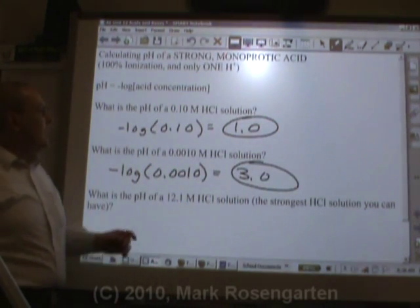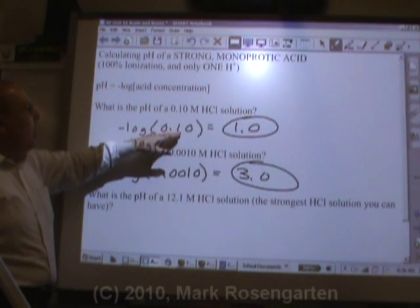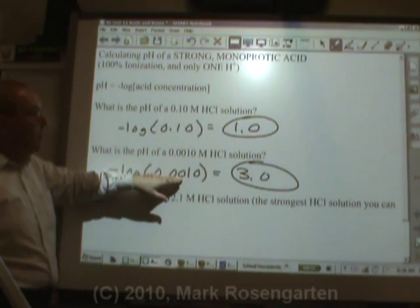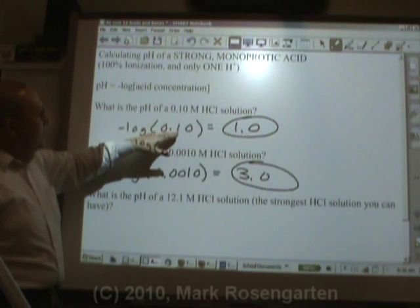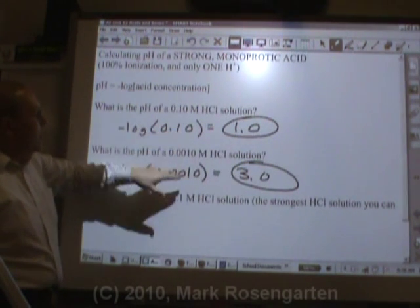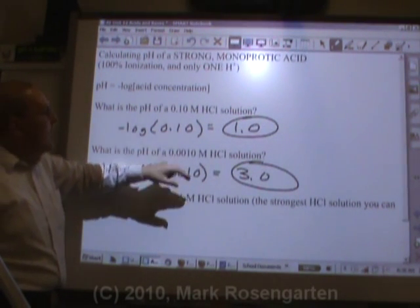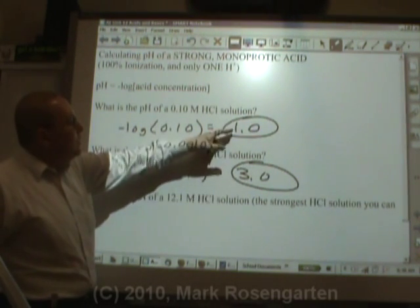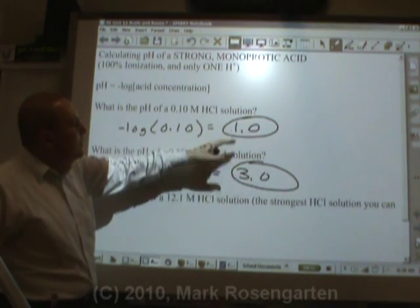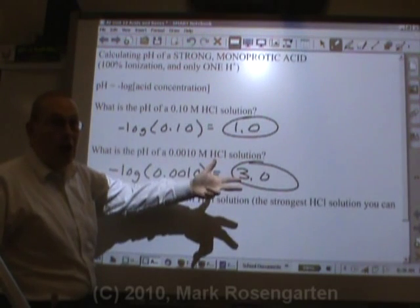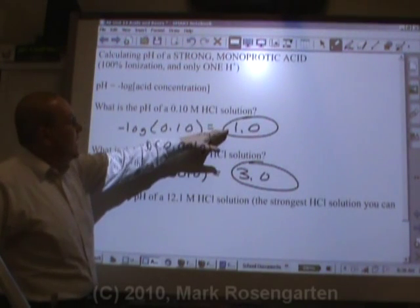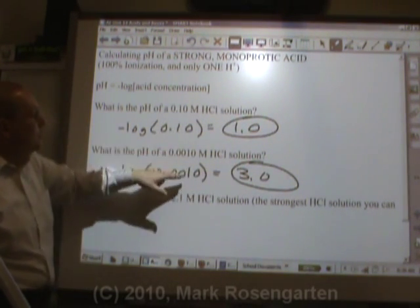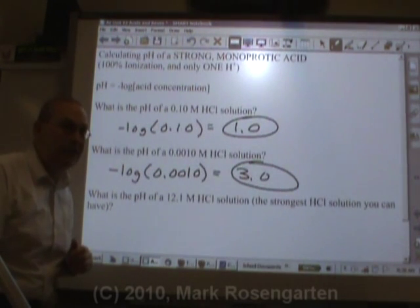As you can see, this acid is 100 times stronger than this acid — its concentration is 100 times greater. And notice its pH indicates that. Since there's a difference of two pH units, that's 10 to the power of 2, which is 100. This acid is 100 times stronger than that acid, and that shows up when you compare their molarities.